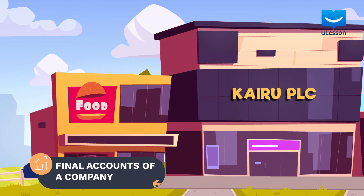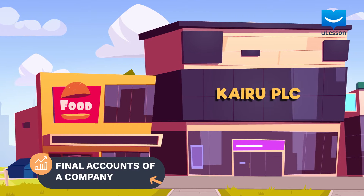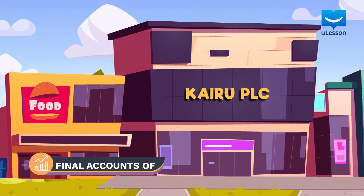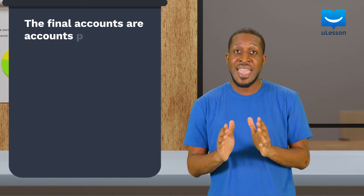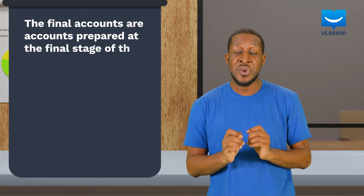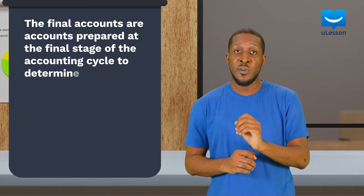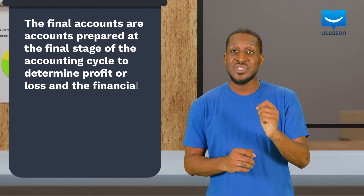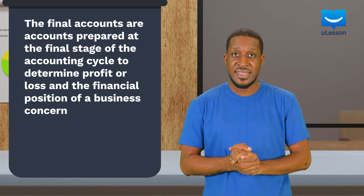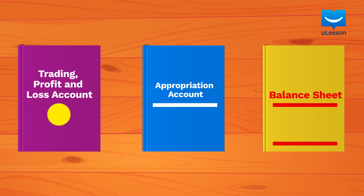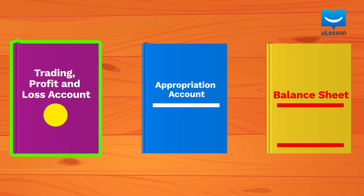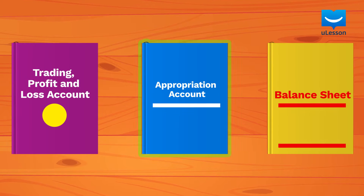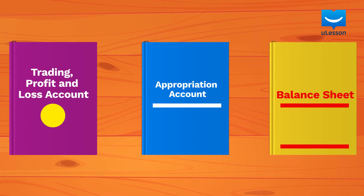Hi, in the previous lesson, Cairo formed Cairo PLC and now is expected to publish its final accounts annually. The final accounts are accounts prepared at the final stage of the accounting cycle to determine profit or loss and the financial position of a business concern. The final accounts of a company are the trading profit and loss account, appropriation account, and balance sheet.